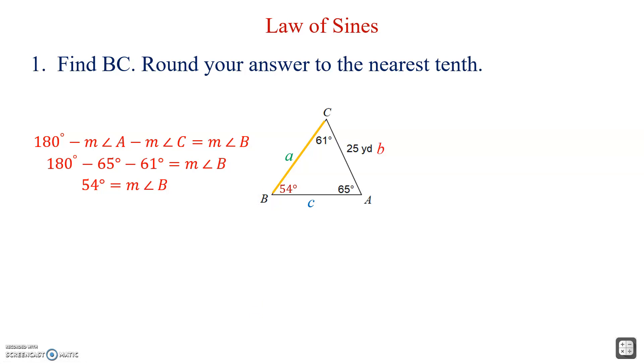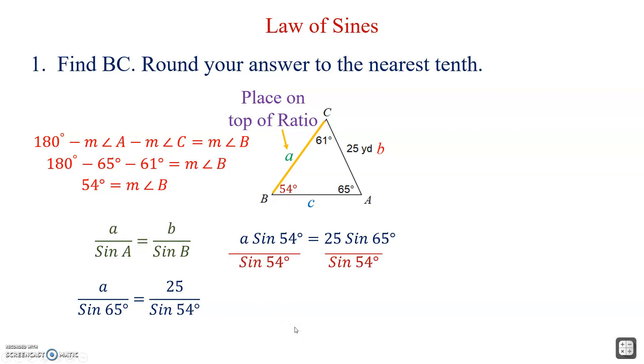Now that I have the 54 degrees, I now have two complete ratios. I've got the uppercase A and lowercase a, and again we're trying to find a, and the uppercase B and the lowercase b. Because we're trying to find the lowercase a, that's what we're going to put on top. Corresponding ratio, a over sine A equals b over sine B. Substitute everything in, and then eventually cross multiply, that'll give us a sine 54 equals 25 sine 65. To get a by itself, we'll divide both sides by sine 54.